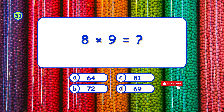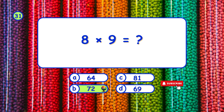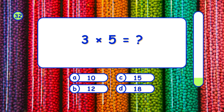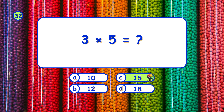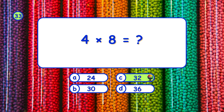What is 8 times 9? It's B, 72. What is 3 times 5? It's C, 15. What is 4 times 8? It's C, 32.